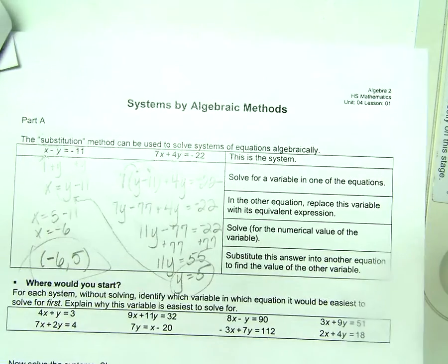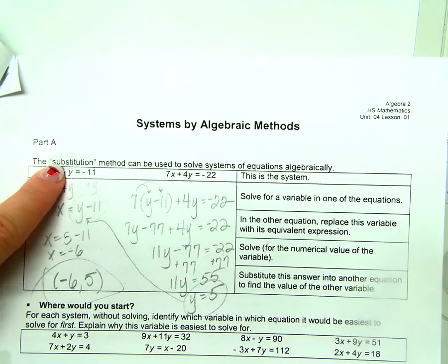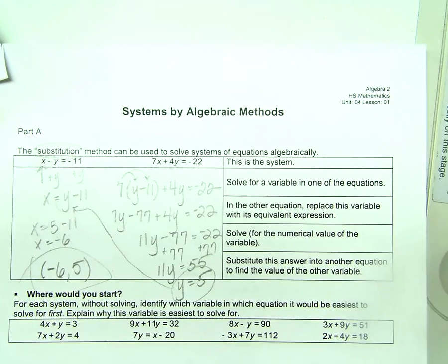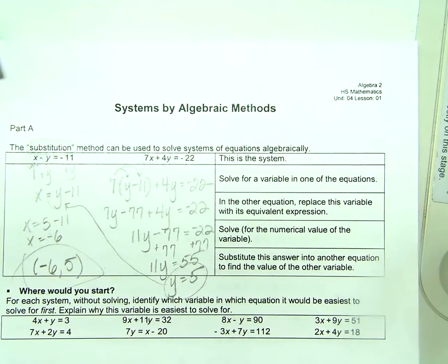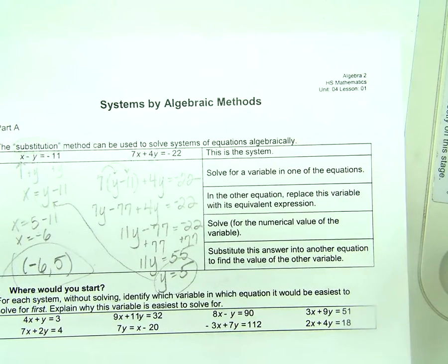What's another way to solve a system of equations? Substitution. And that's what we talked about on Friday, and you guys are feeling okay with that? Solving for one, getting the runt variable by itself, and substituting it into the other.